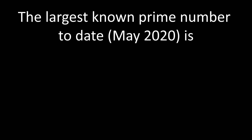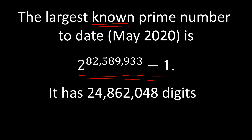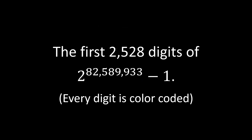The largest known prime number to date — as of May 2020 — is a specific number. When I say the largest known prime, I mean that a human being, with the help of a computer, has actually verified that this number is prime. Of course there are prime numbers much larger than this one, but this is the largest that has been checked so far. That number is quite big — it has a little bit less than 25 million digits. I'm going to give you an animation of the first 2,528 digits of that number, with every digit colored.